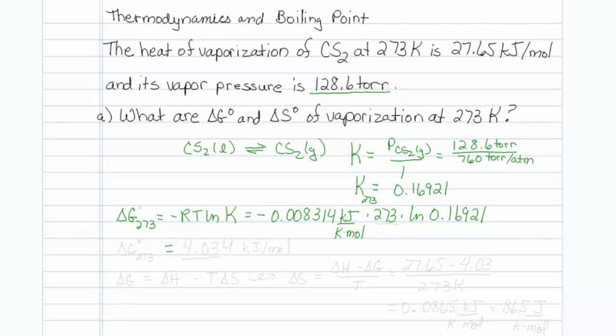We will put that into our calculator, and it turns out that delta G is equal to plus 4.034, which when we consider significant figures would be 4.03, and that would be in units of kilojoules per mole.